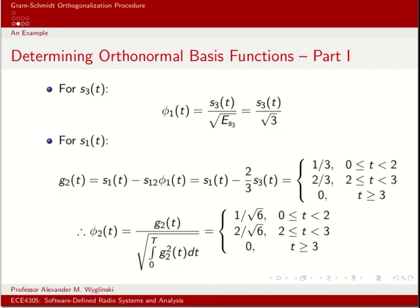Now that we know what the waveforms look like, let's do the entire Gram-Schmidt orthogonalization process. First, for S_3 of t, that defines phi_1 of t. We normalize S_3 of t by the square root of its energy, which turns out to equal S_3 of t divided by the square root of 3. Next, we take S_1 of t and subtract off any part of S_1 contained in the phi_1 basis direction. G_2 of t equals S_1 of t minus the contribution of S_1 projected onto phi_1 of t, which turns out to be two-thirds. We then normalize G_2 of t by the square root of its energy to get phi_2 of t.